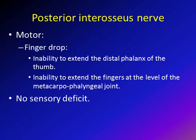The posterior interosseous nerve is a branch of the radial nerve, so its manifestations are part of the general picture of the radial nerve. The patient will have finger drop — unable to extend the fingers at the metacarpophalangeal joint — and will not be able to extend the distal phalanx of the thumb. Remember, the posterior interosseous nerve is a motor nerve with no sensory deficit. Radial nerve gives wrist drop and finger drop; posterior interosseous nerve gives only finger drop.